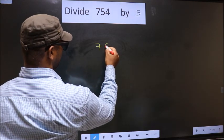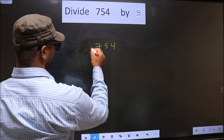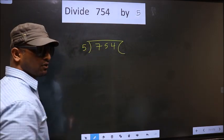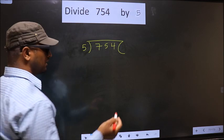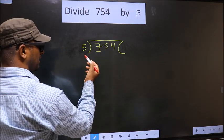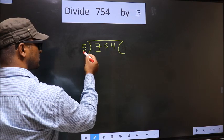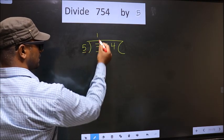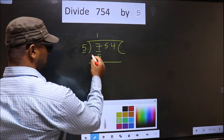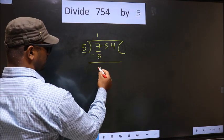That is 754 and 5 here. Now here we have 7 and here 5. A number close to 7 in 5 table is 5 once 5. Now you subtract 7 minus 5, 2.